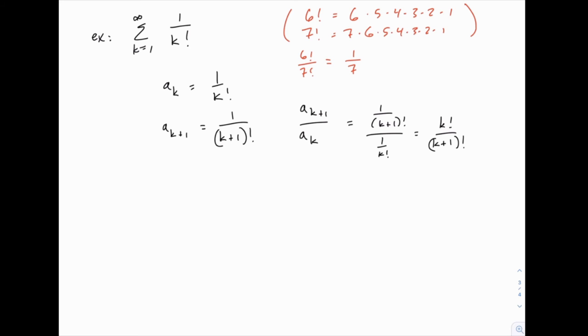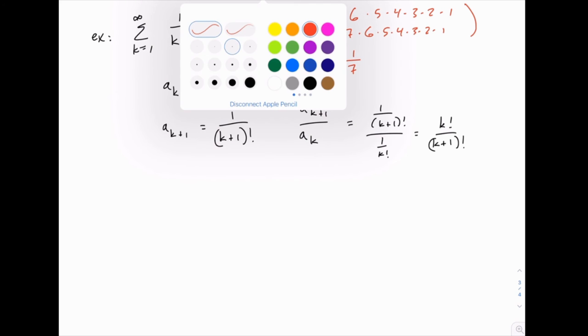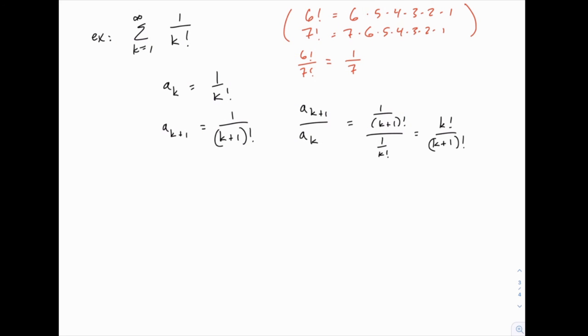Notice that if we divided six factorial by seven factorial, everything would cancel except the seven in the denominator, because this descending product contains everything including the factorial below it. Seven factorial is like 7 times six factorial. A lot of things cancel when you do this.